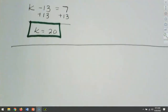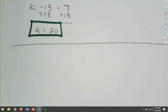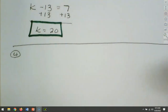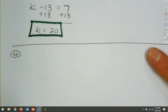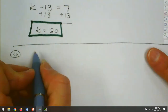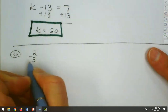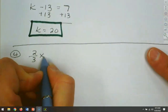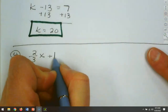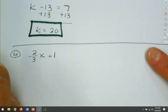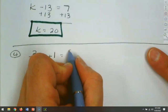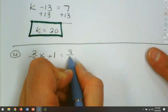Question 4 has fractions. We can either work with the fractions or we can clear the fractions out. For this one, I think we'll work with the fractions, because these can go together — they already have the same denominator.